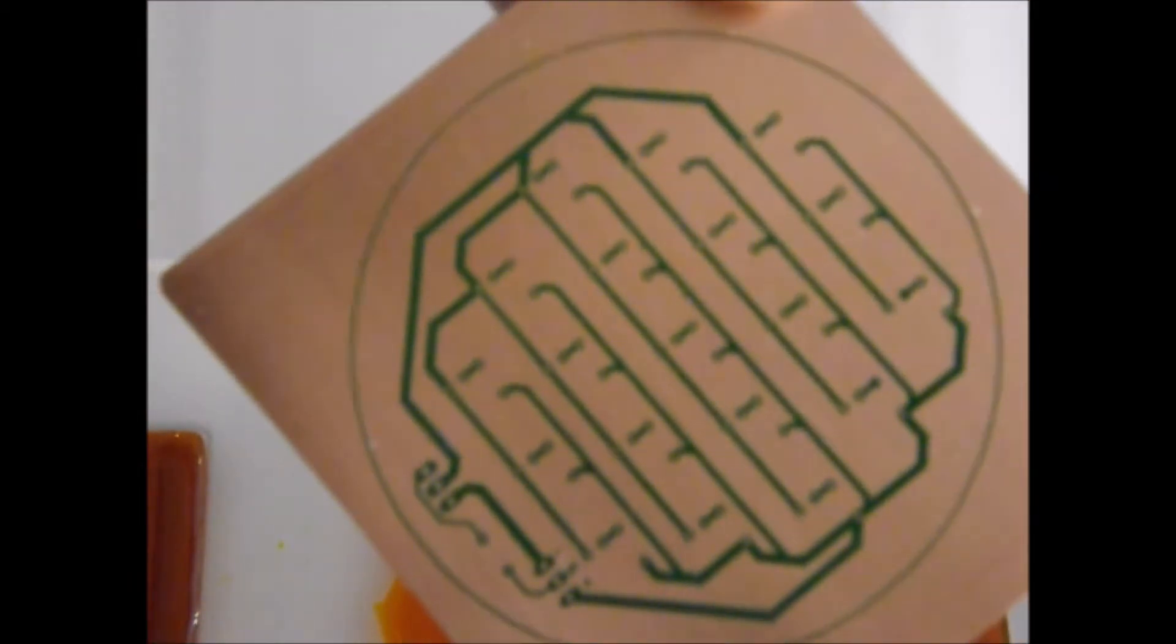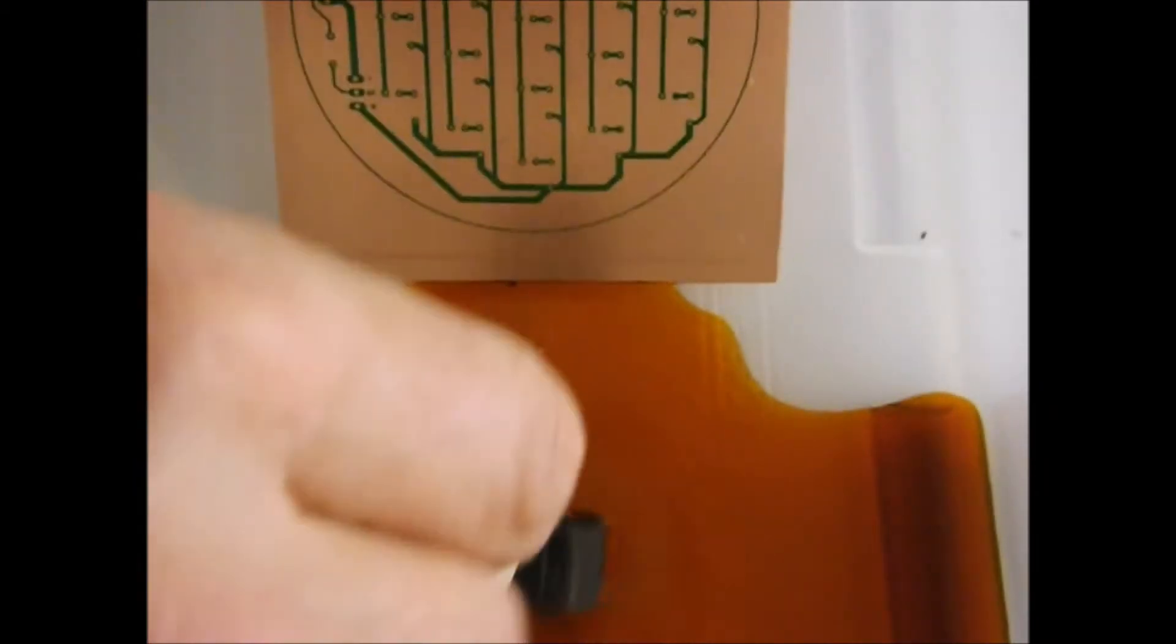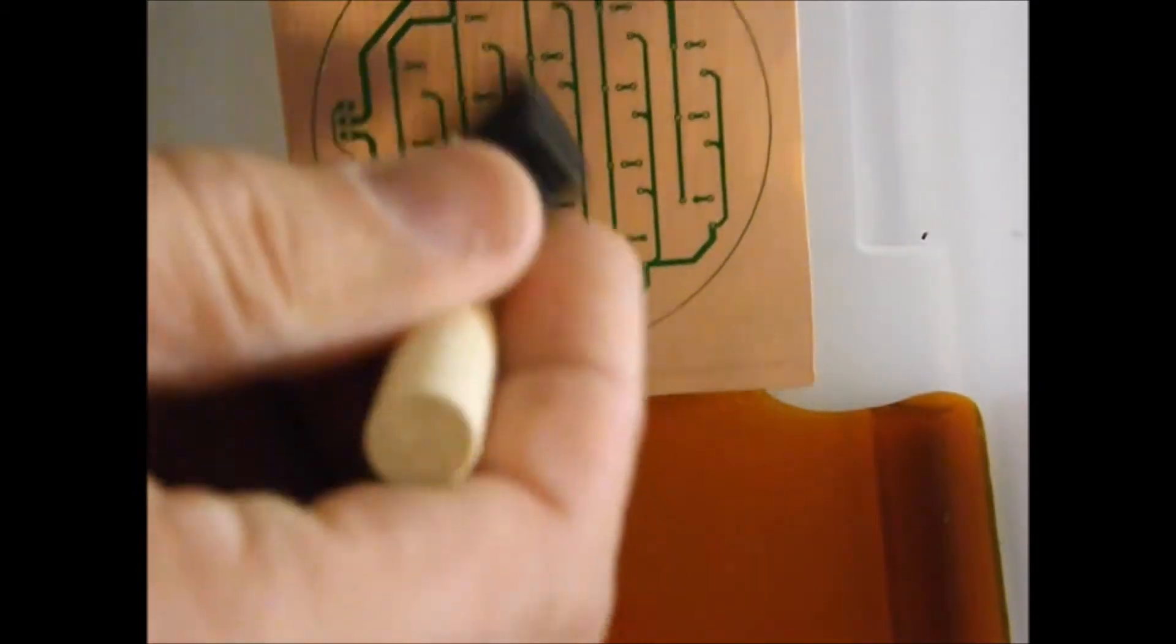To do my etching I use ferric chloride. But I use a wiping method. So I use very little of the liquid itself. I'm only going to pour out a couple ounces of ferric chloride. And although that's a fairly large container, I'm only going to pour out a couple ounces of liquid. And there's my board with the resist on it. Ready to go. And I'm just going to take a foam brush and I'm going to start wiping this board.